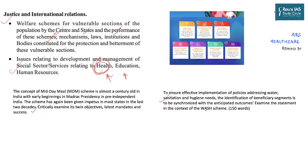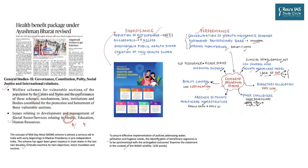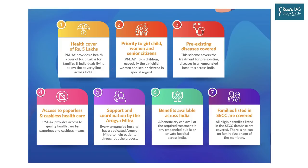In the forthcoming discussion, we will analyze Pradhan Mantri Jan Arogya Yojana starting with its highlighting features, significance, performance over the past two to three years, and concerns raised during that time. The scheme provides a health cover of five lakh rupees per family living below the poverty line. It prioritizes children — especially the girl child — women, and senior citizens, and unlike most private insurance schemes, it covers pre-existing diseases.